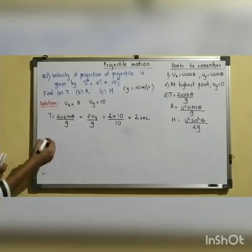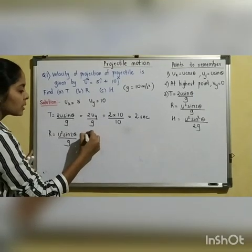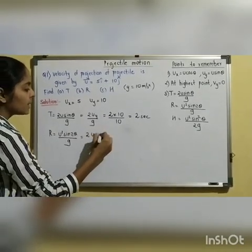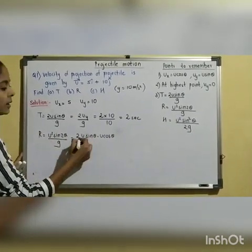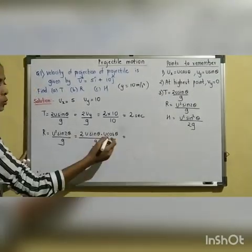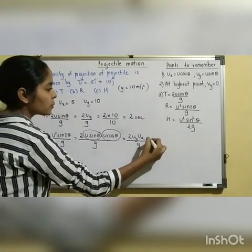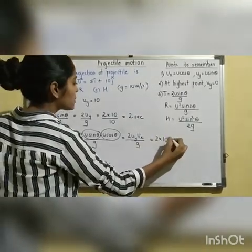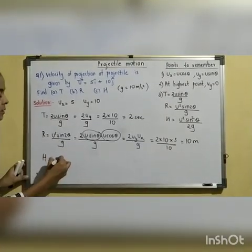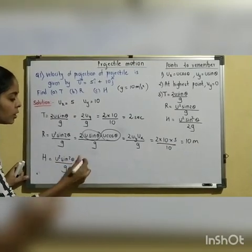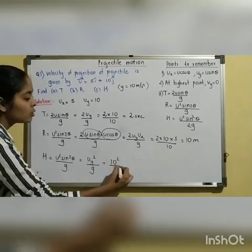For horizontal range, the formula R = u² sin 2theta / g can be rewritten as R = 2uy·ux / g. Substituting uy = 10, ux = 5, g = 10: R = 2×10×5/10 = 10 meters. For maximum height, H = u² sin² theta / 2g = uy² / (2g) = wait, H = uy² / g = 10² / 10 = 10 meters.